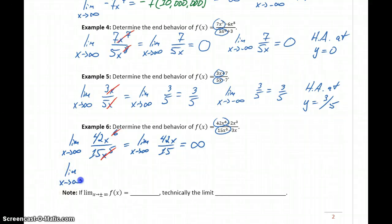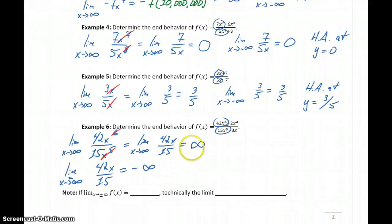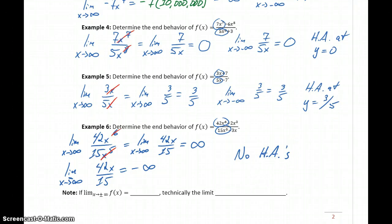If we take the limit as x approaches negative infinity of 42x over 15, now we're plugging in negative 10, negative 10,000, negative 10 million, negative 10 billion. A negative times a positive leads us to negative infinity. Since neither end gives us a real number — we get positive or negative infinity — this function has no horizontal asymptotes at either end.